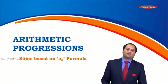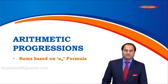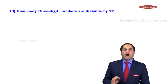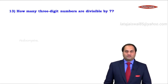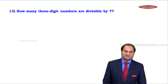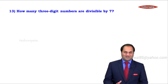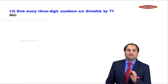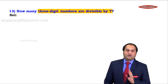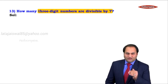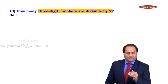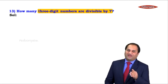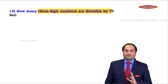Let's go through a few more sums based on the AN formula. The next sum is: how many three-digit numbers are divisible by 7? We are supposed to find the number of terms, so we need to find the value of N.